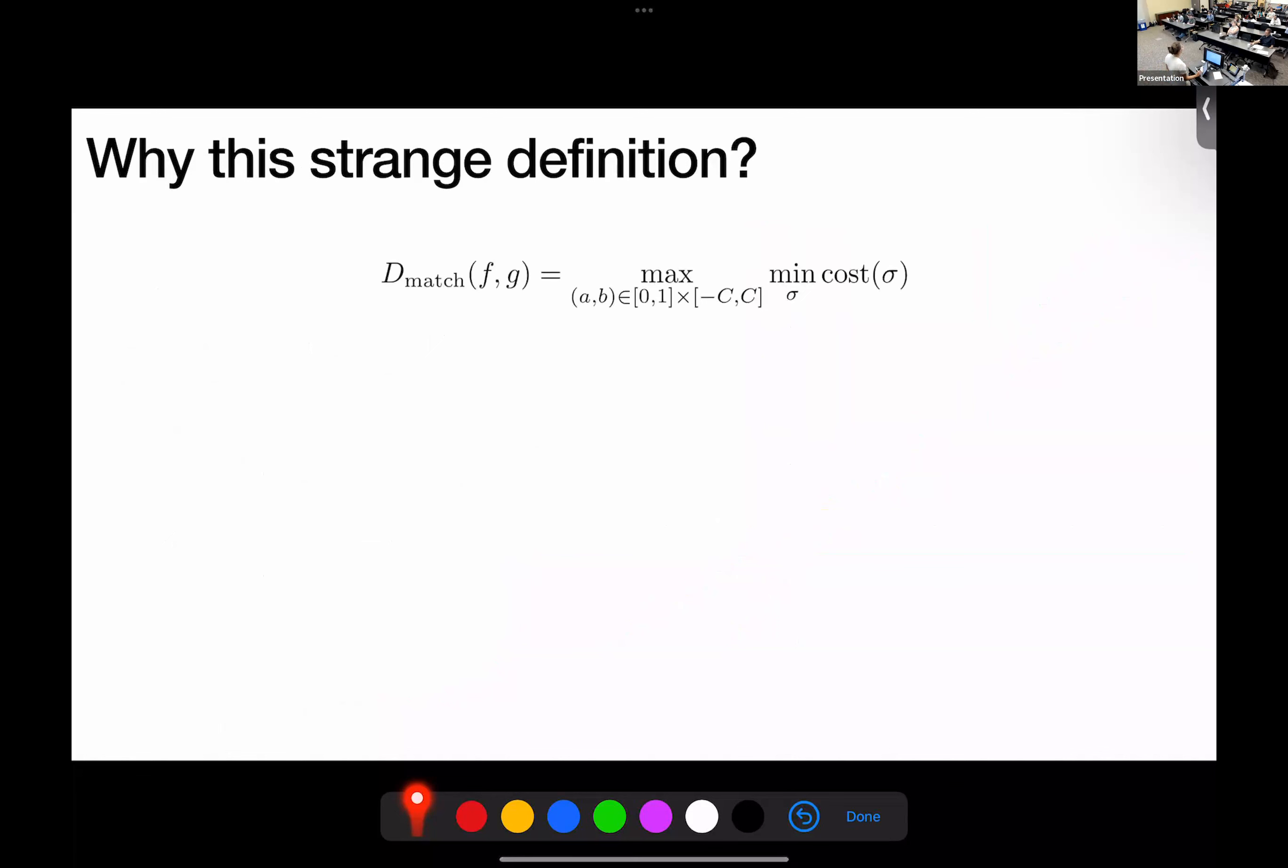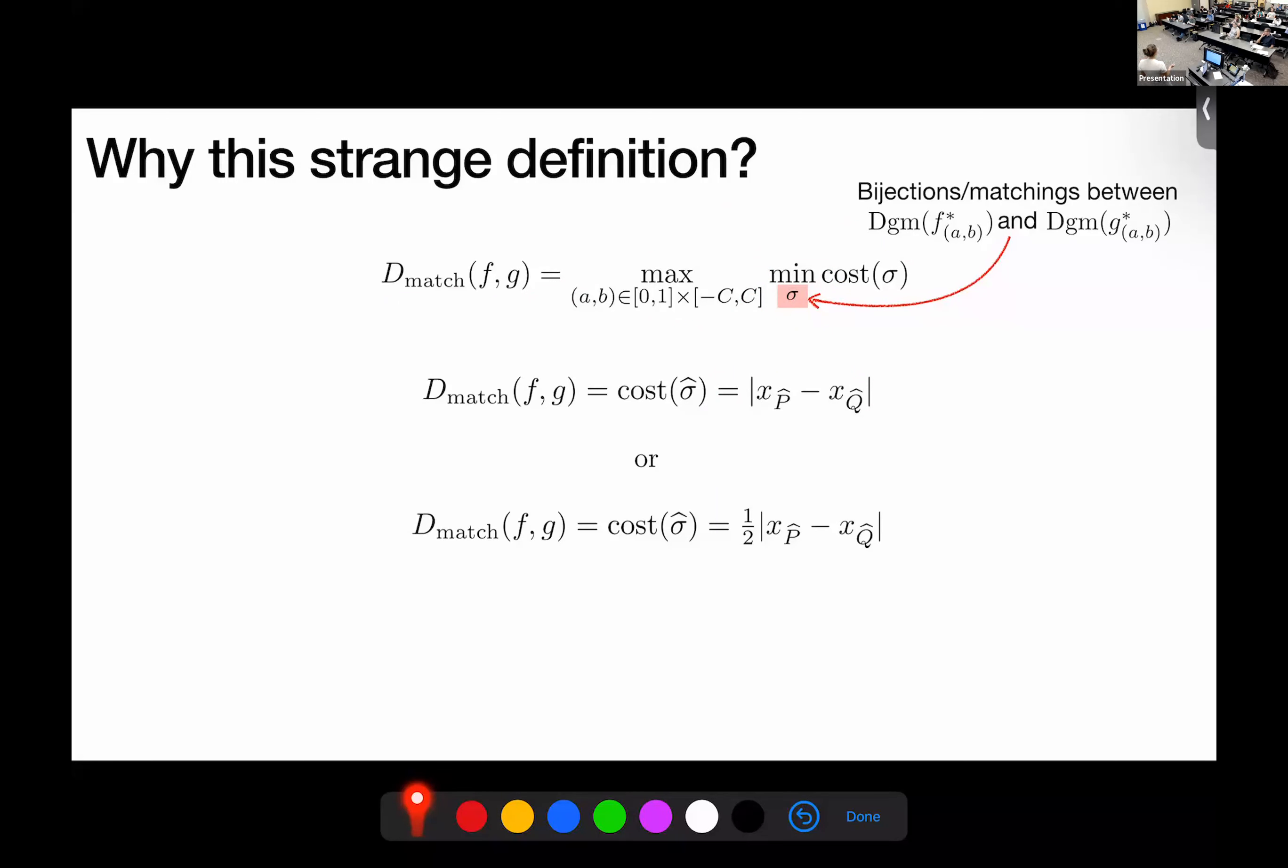And in particular it depends on how the matching distance, what's the form of the matching distance. So, the matching distance between two functions can actually be written in this way, where we'd take a maximum over the parameter values of minimum over the matching between the diagrams, between the persistence diagrams, right? However, that cost, that optimal, the cost of the optimal matching is actually always of this form. So it's either a difference between abscissas of the intersection between filtering line and the extended Pareto grid or half of that. This is a consequence of the position theorem that I told you before.